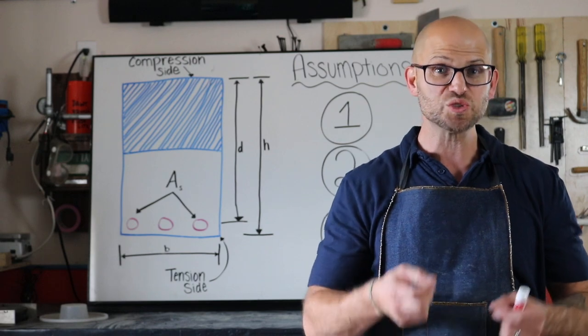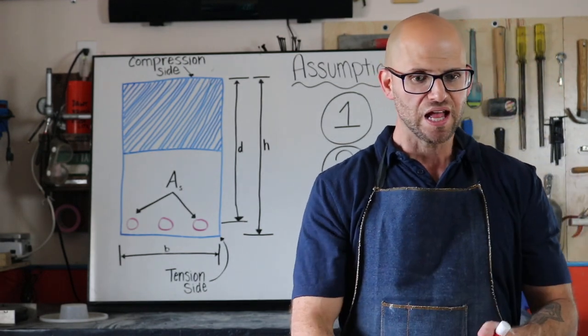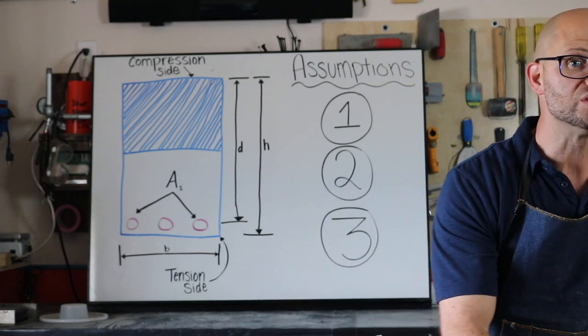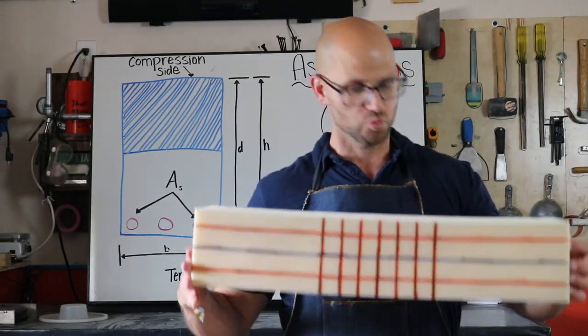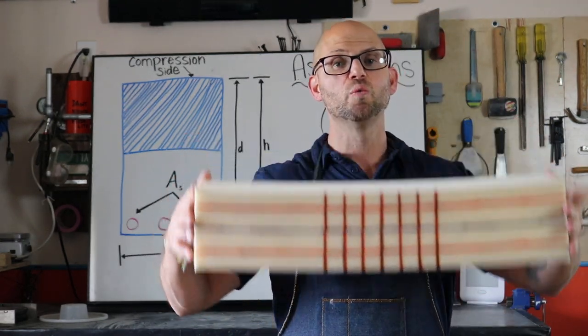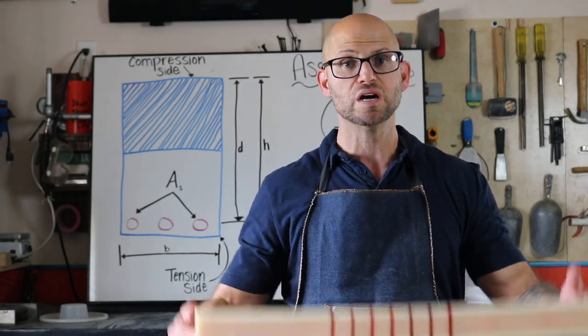What that means is plain sections remain plain. Another way of saying that is when the concrete beam does start bending, when it goes through its failure mode, what we are analyzing and designing for are very, very small deflections.